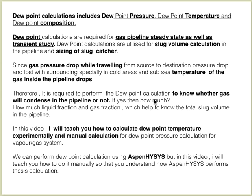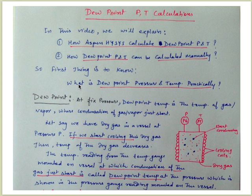It is required to perform dew point calculations to know whether gas will condense in the pipeline or not, and if yes, how much — the liquid fraction and gas fraction — which helps to know the total slug volume in the pipeline. In this video I will teach you how to calculate dew point temperature manually. For dew point pressure calculation for vapor and gas systems, we can use HYSYS, but in this video I will teach you how to do it manually so you understand how HYSYS performs these calculations.